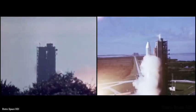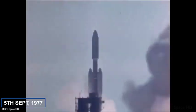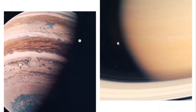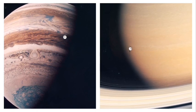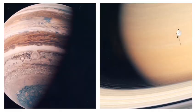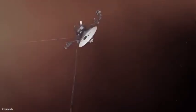The Voyager 1 space probe was launched by NASA on September 5, 1977 as part of the Voyager program. Its initial mission was to explore the planets of Jupiter and Saturn. But not so long after the mission had started, the Voyager had accomplished every single one of its goals.